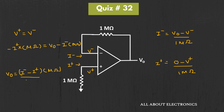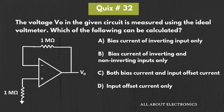This is nothing but the input offset current. So we can say that the output voltage Vout will be equal to this input offset current times the 1 megaohm resistor. So for the given circuit, from this output voltage we can find only the input offset current. Therefore, for the given quiz, D is the correct answer.